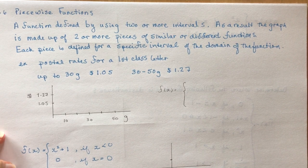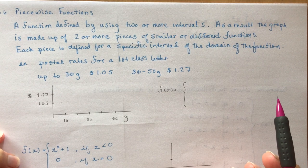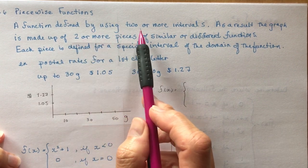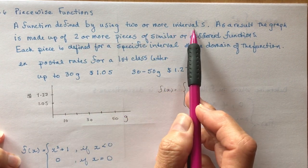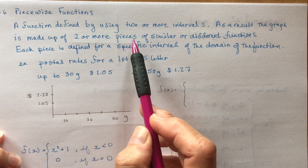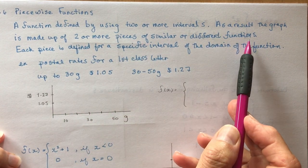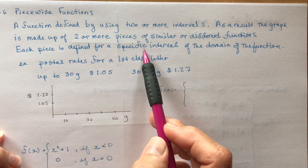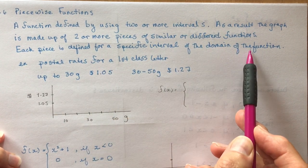Like the parent functions, you need to know how to draw them. A piecewise function is defined by using two or more intervals. As a result, the graph is made up of two or more pieces of similar or different functions. Each piece is defined for a specific interval of the domain of the function.